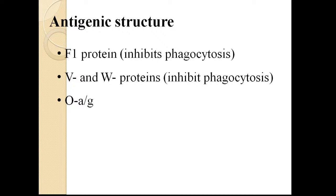Yersinia has specific antigens. The F1 protein inhibits phagocytosis, meaning phagocytes are unable to engulf and destroy the pathogen. VNW proteins also inhibit phagocytosis and are present in the cell wall. There is also an O-antigen, which is the lipopolysaccharide of the cell wall — common to gram-negative bacteria.